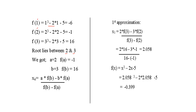We substitute x = 1, 2, 3 — positive, negative and consecutive values — to find where the root lies. When x = 1, f(x) = -6. When x = 2, f(x) = -1. When x = 3, f(x) = 16. Since f(2) is negative and f(3) is positive, the root lies between 2 and 3.